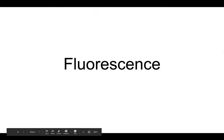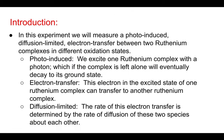Hello, I'm Michael Vitarelli and today we're going to talk about fluorescence. In this experiment we're going to have two ruthenium complexes in different oxidation states. One will be a donor which can donate an electron, the other an acceptor which can accept an electron.